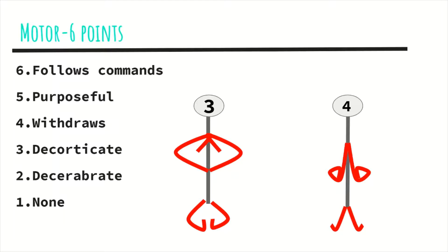Now for the next we have decorticate and decerebrate posturing, which both signify significant brain stem dysfunction and injury. So for three points we have decorticate posturing, which after you provide painful stimuli, the arms, the wrist, and the legs are flexed inward towards the core, as shown by my amazing drawing here. So again, decorticate for going towards the core, like your wrist, your arms, everything is flexed inward.